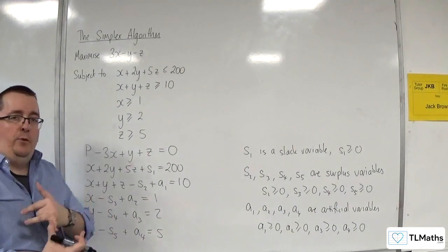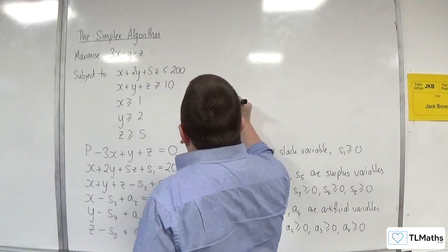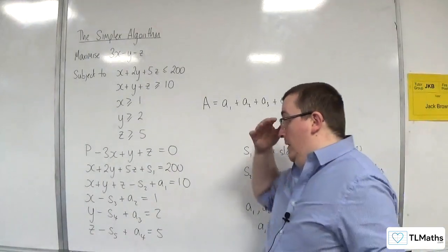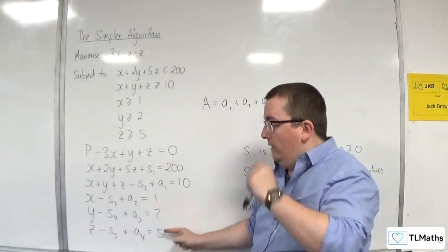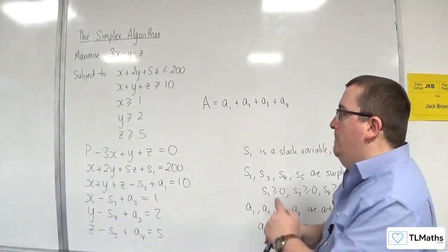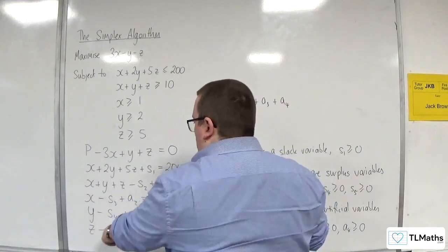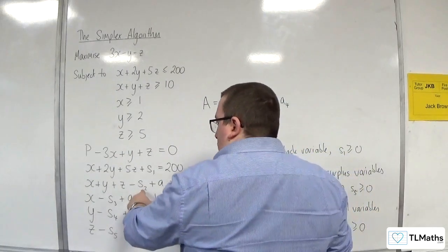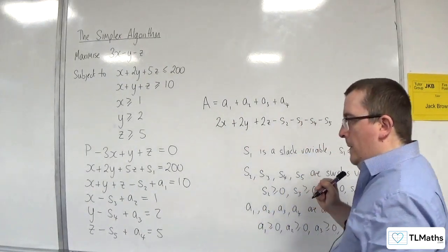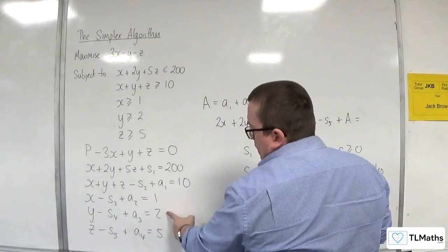The only thing we haven't got yet is capital A, which is the sum of a1, a2, a3, and a4 — the sum of the artificial variables. I'm going to add together the four equations that involve a1, a2, a3, a4. Adding them all together gives: 2x plus 2y plus 2z minus s2 minus s3 minus s4 minus s5 plus capital A equal to 10 plus 1 plus 2 plus 5, which is 18.